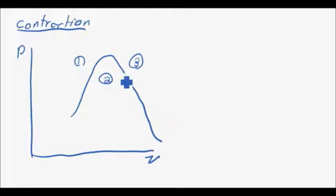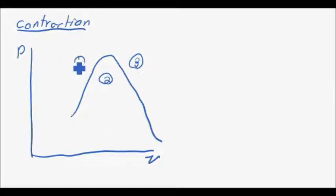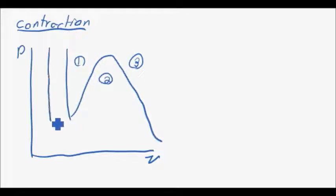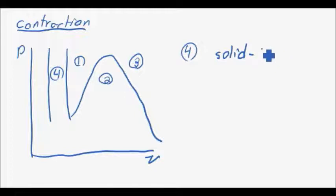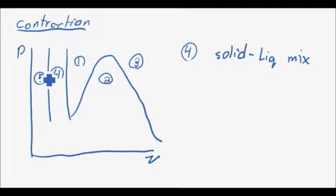Gas typically has more energy — the molecules are vibrating faster — so you have a higher specific volume. If you're a solid and it contracts as it turns into a solid, you'd expect the specific volume to move in the left-hand direction. I'll draw this line right here. As you transition from the liquid-to-vapor region you also go through the transition to the solid region. I'll call this number four — a solid-liquid mixture — and number five will be our solid.